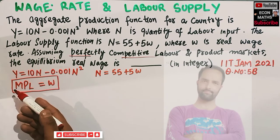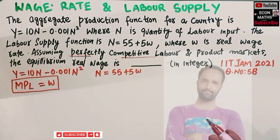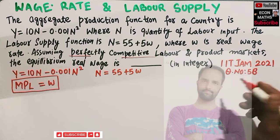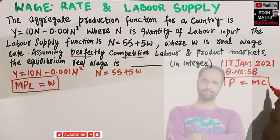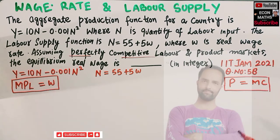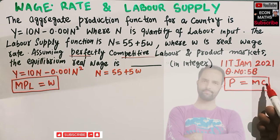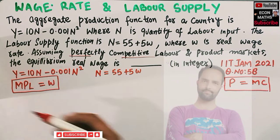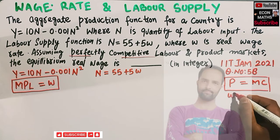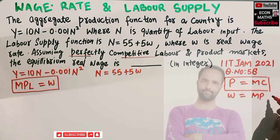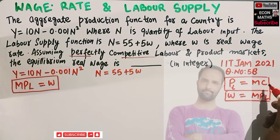You can also say the marginal revenue product of labor should be equal to the wage rate. In perfect competition, for a firm equilibrium requires price equal to marginal cost. Here, since we have a production function and labor supply, to find the real wage rate: the wage rate should be equal to the marginal product of labor. So in place of price we have W, and in place of marginal cost we have marginal productivity of labor.